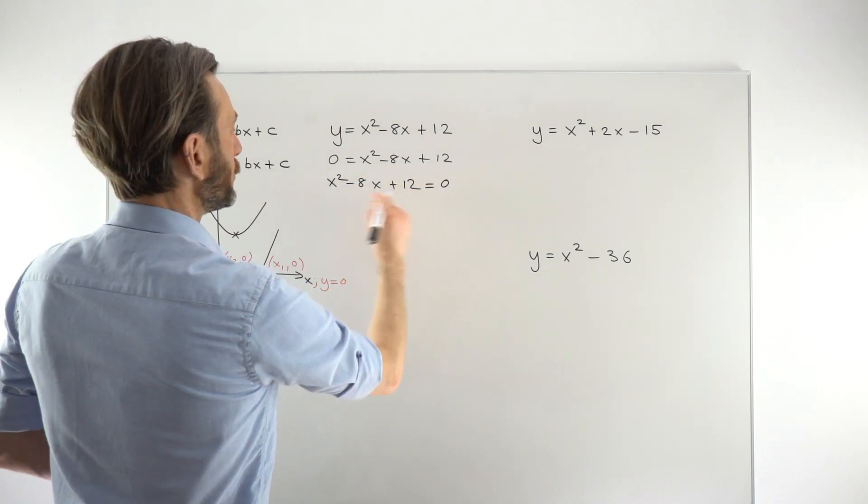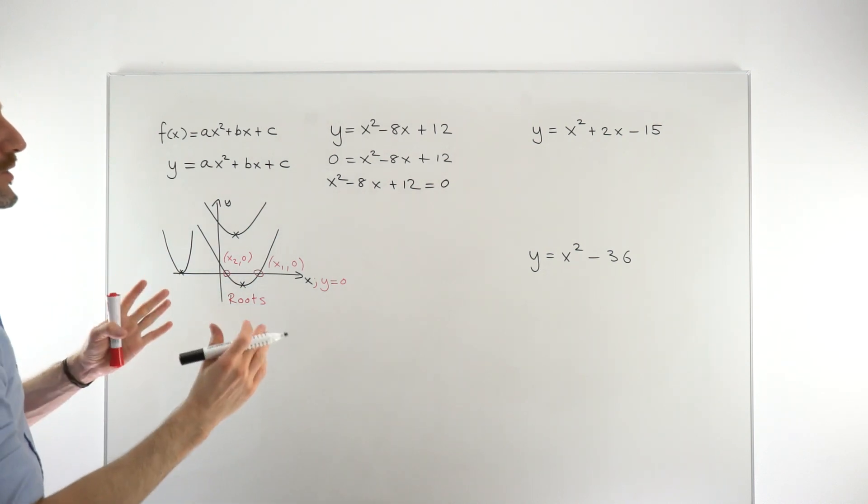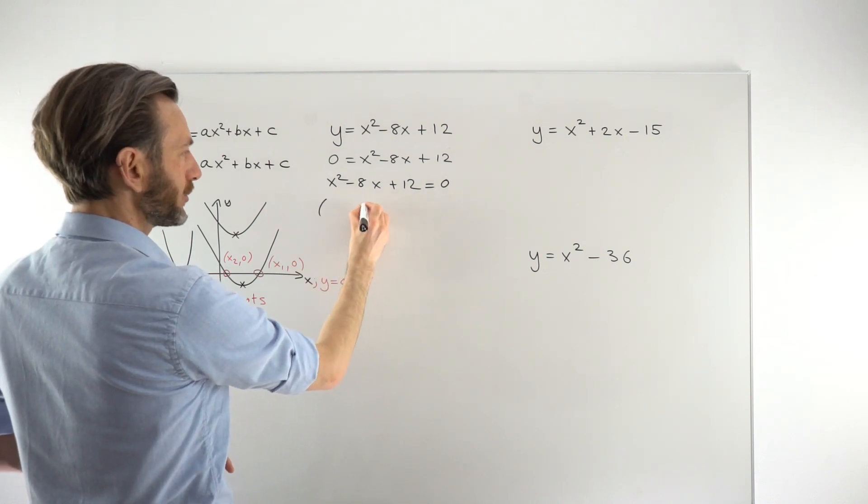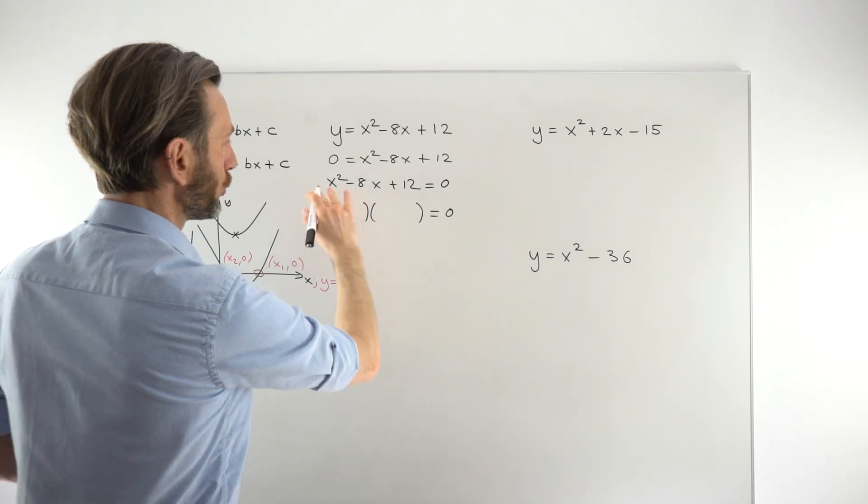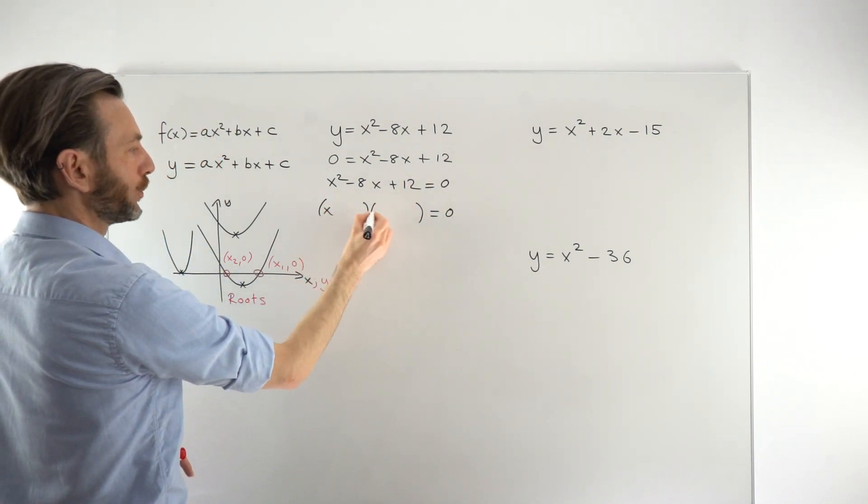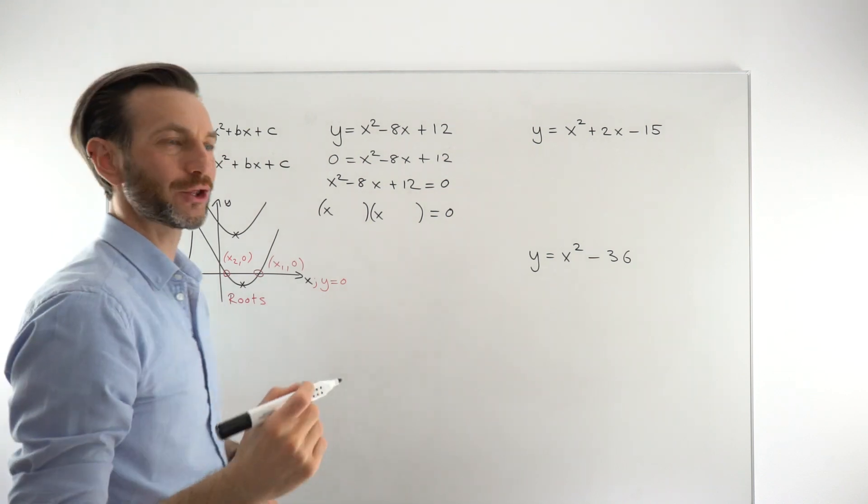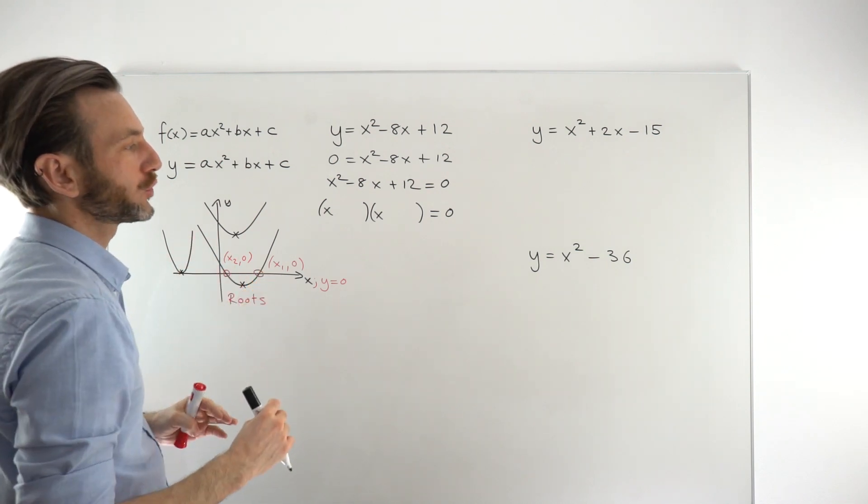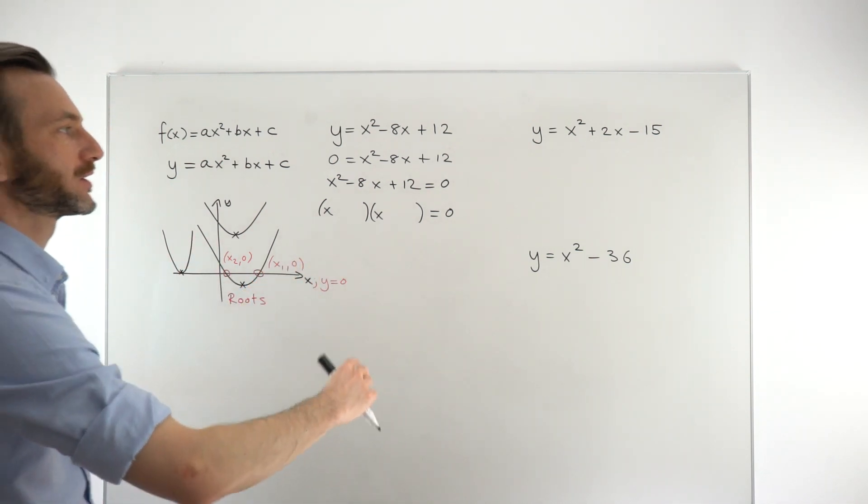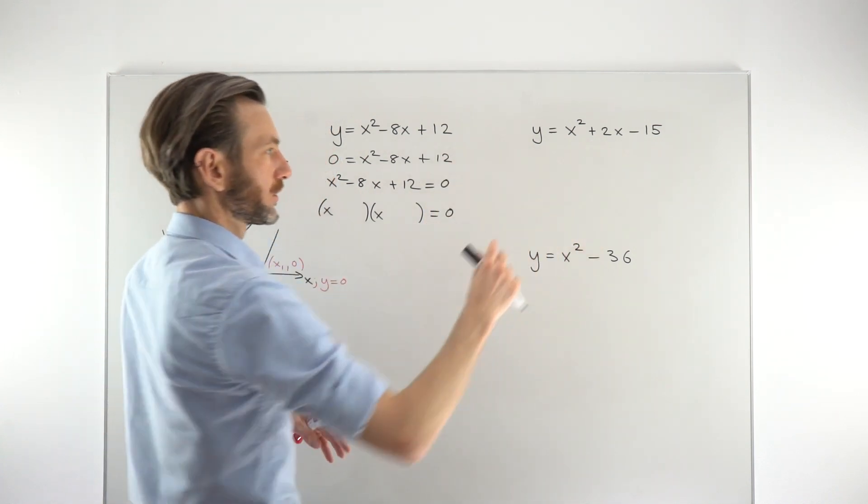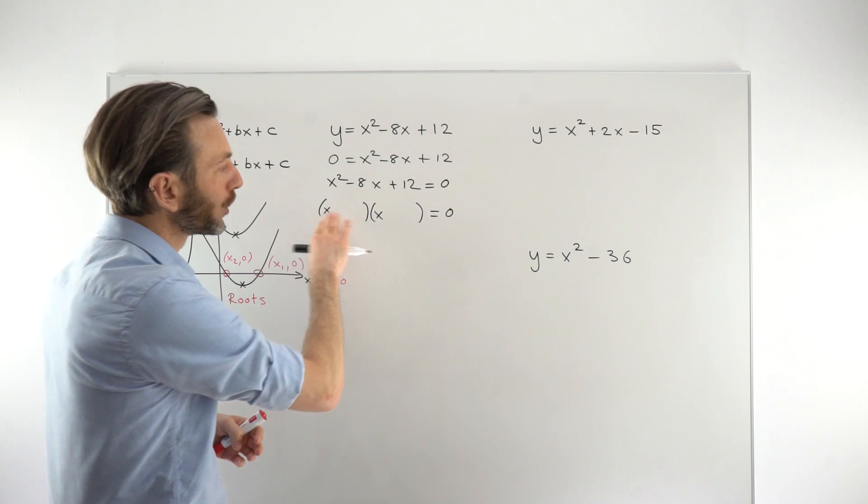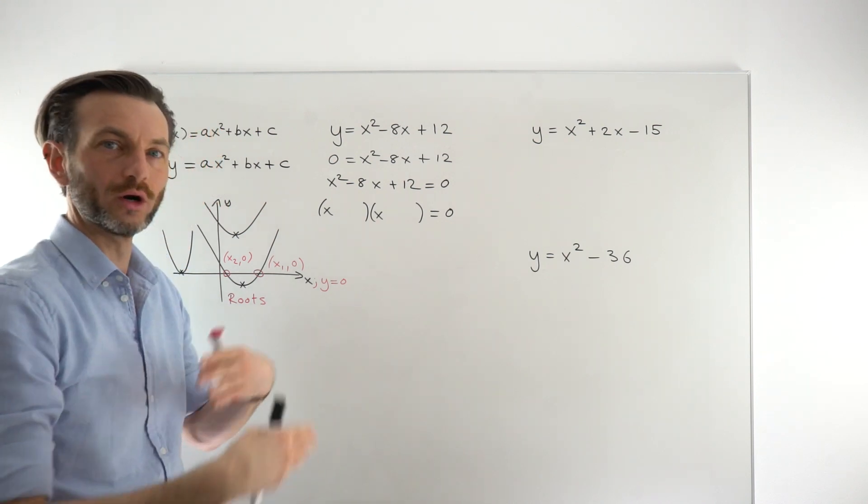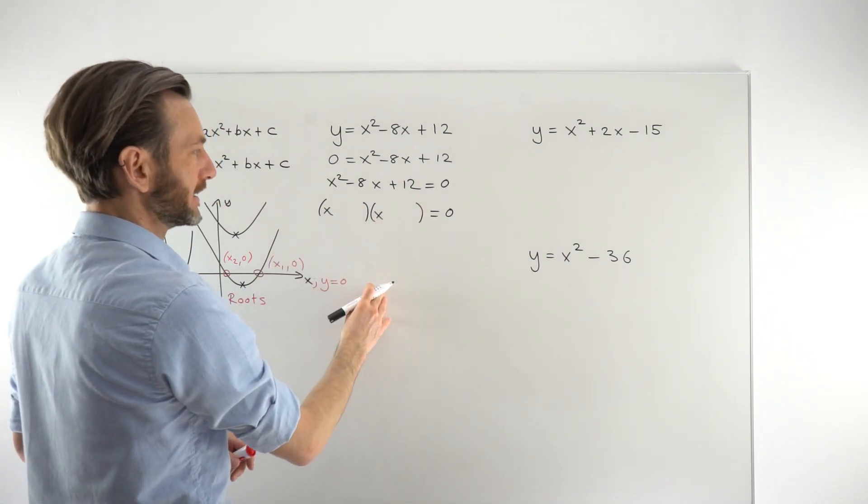So the process really is substitute 0 in. So once you've subbed in a 0, that is now set up to find the roots of this parabola. If you're not sure about the factorizing and you're not sure about solving quadratic equations, you might want to check out those classes first. If you're still not sure, check the classes dedicated to that topic.